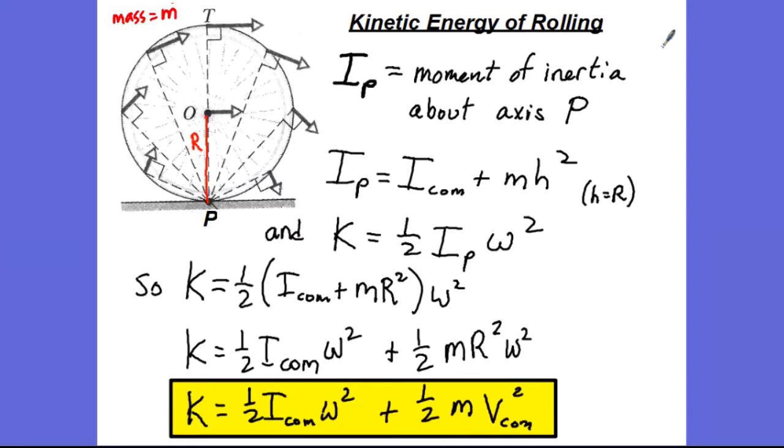Let's talk about the kinetic energy of a rolling object, like a rolling wheel in this case. We know that kinetic energy for rotating objects is one-half I omega squared, where I is the moment of inertia about the axis of rotation, which I've labeled here with the letter P.